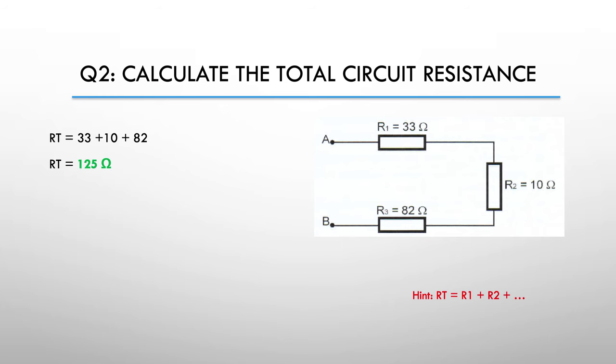And our answer. R total is 33 plus 10 plus 82, giving us 125 ohms as the total or effective resistance.